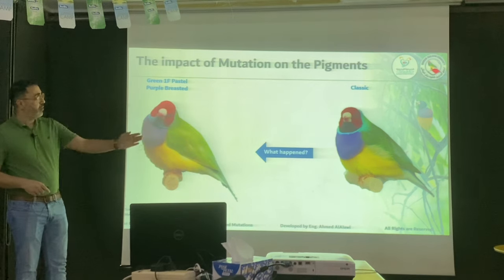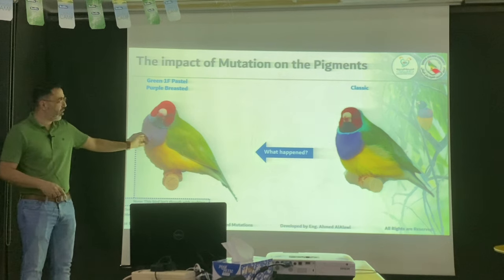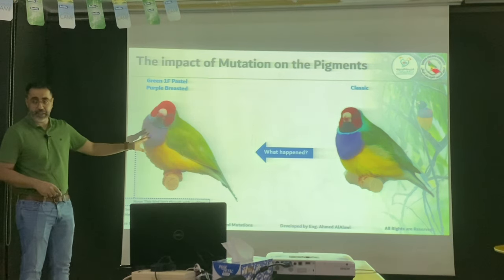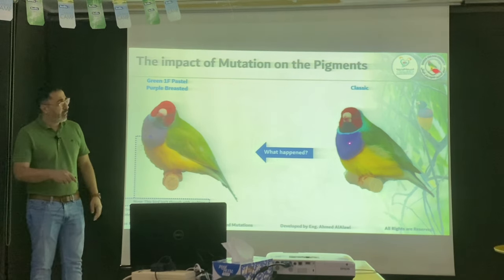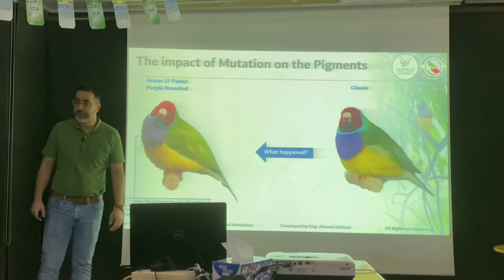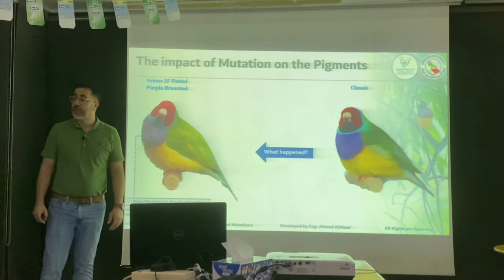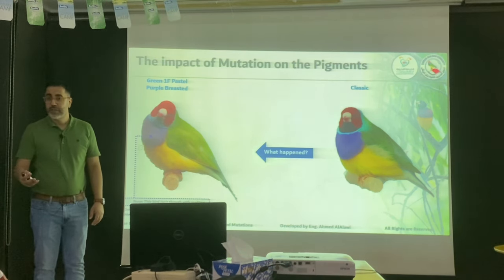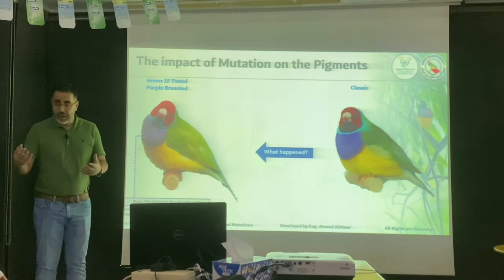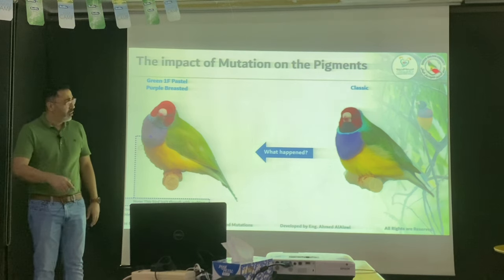Now, the classic bird — and I have a pastel bird. This is a mutation, so the feather quality is not that great; just think of the color now. What happened? From the classic, I came to here. What happened? Dilute — the color became less, it got diluted. So the back became dilute. The eomelanine — what happened to it? Less.